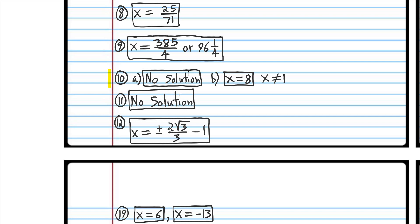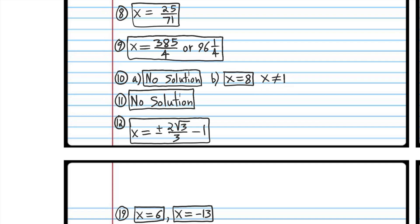This problem is a two-part problem, so this part is worth two points. If you didn't write 'no solution' for part A, you have to subtract half of the points for this part. Since that part is only one of two parts, each part is worth two points. So if you subtract half of the points, you're going to subtract one point if you didn't write 'no solution.' Also, if you included the extraneous answer as one of the solutions for part B, you need to subtract one-fourth of the points for that problem — one-fourth of two would be one-half of a point.